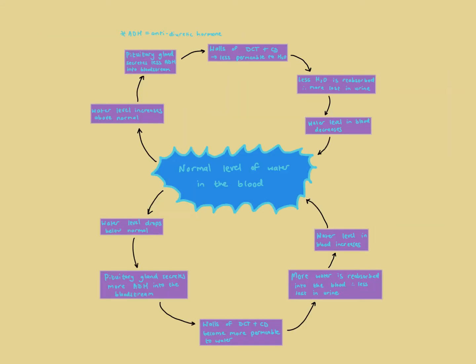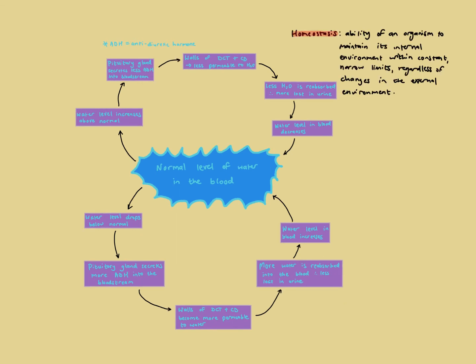This is what we call the homeostasis of water levels, or osmoregulation. Homeostasis is the tendency of an organism to maintain its internal environment — body temperature, water level, blood pH, etc. — within constant narrow limits, regardless of changes in the external environment. Your body maintains homeostasis of many things through a process called negative feedback, where if something is too low, something happens to make it higher — it brings about an opposite response.